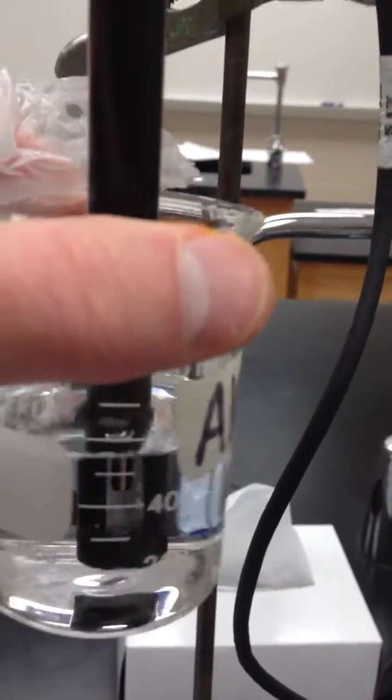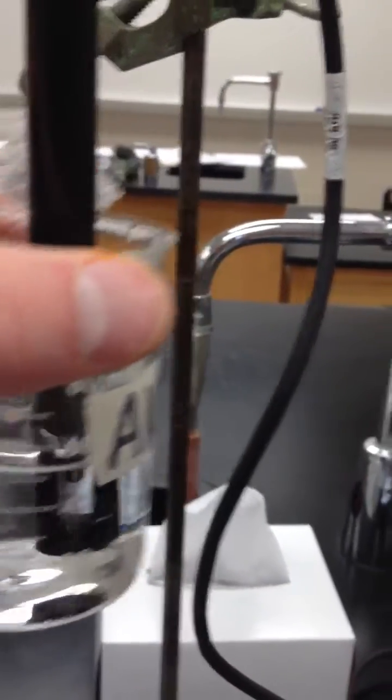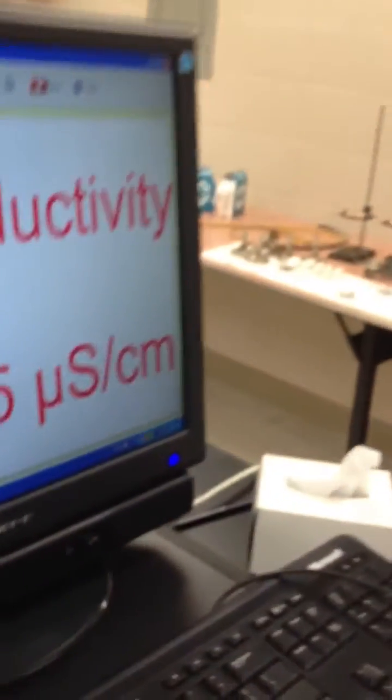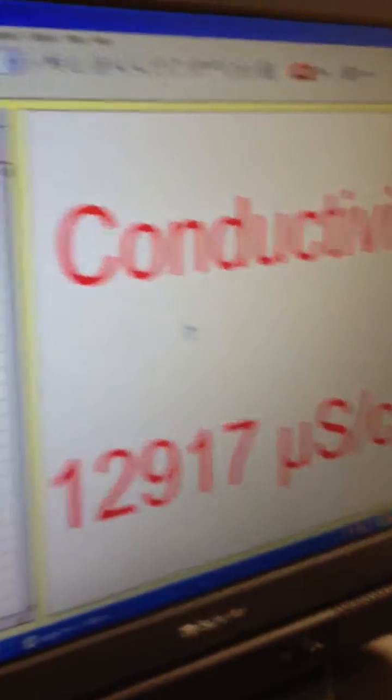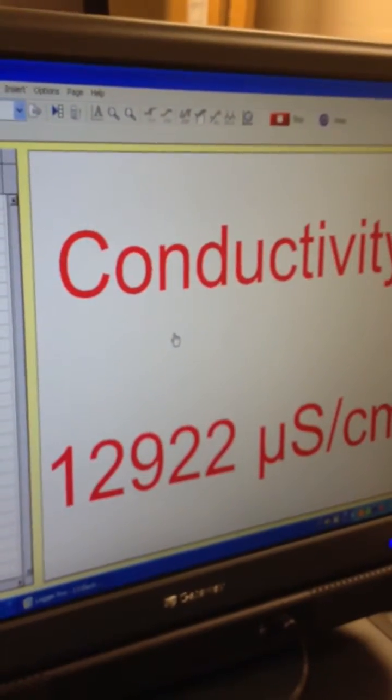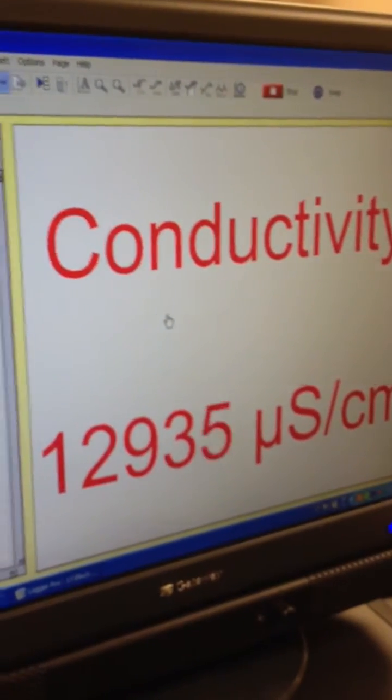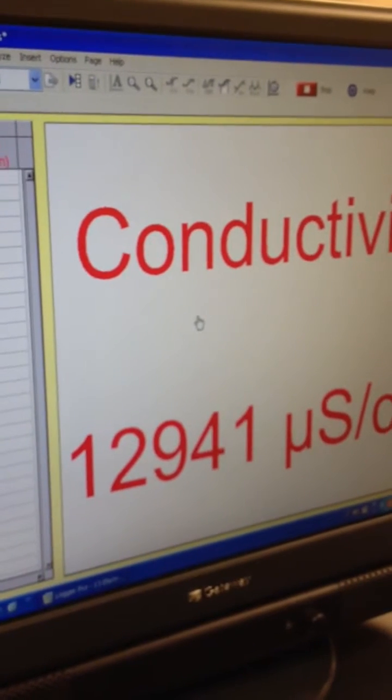One thing you'll notice is that when you get that completely covered, you may have to swirl it. And what you'll see is that we're dealing with a very sensitive scale here. We're dealing with micro Siemens, right? A millionth of the unit.